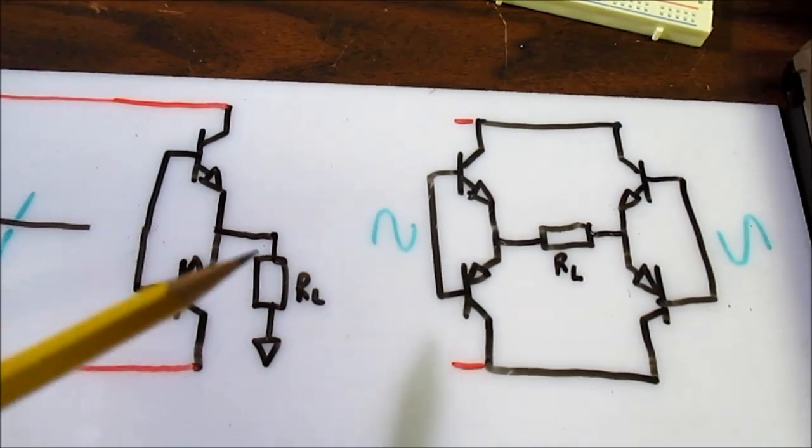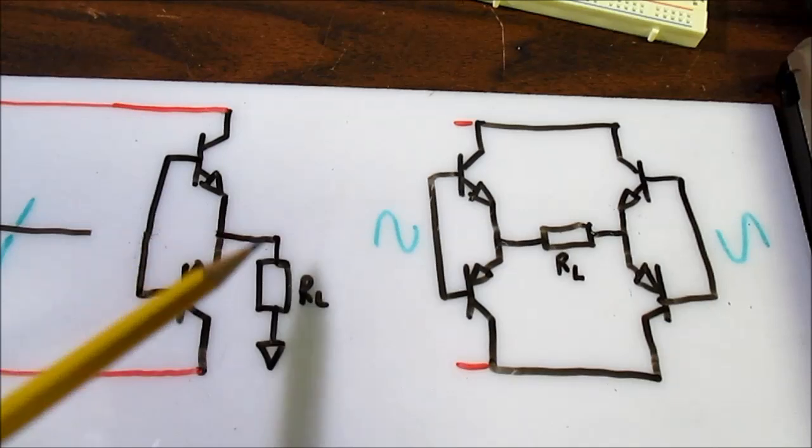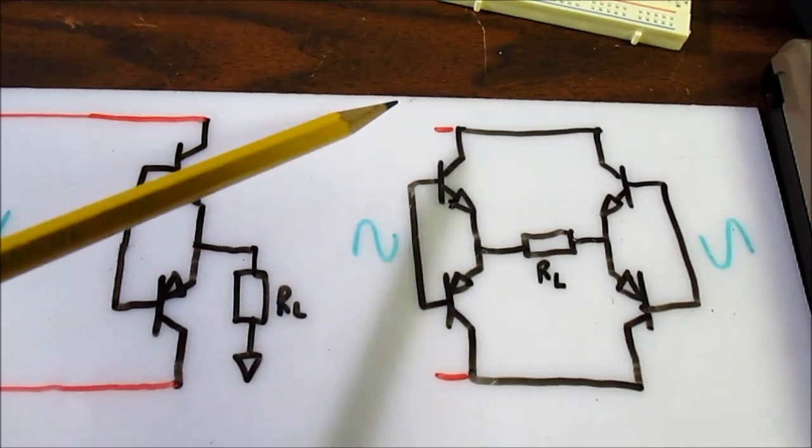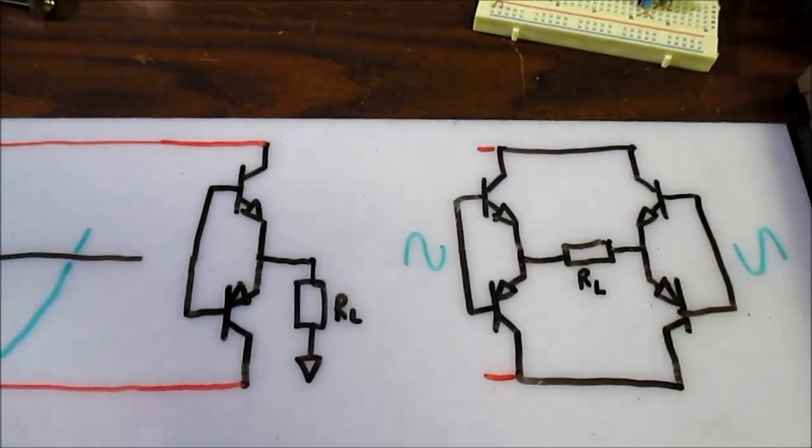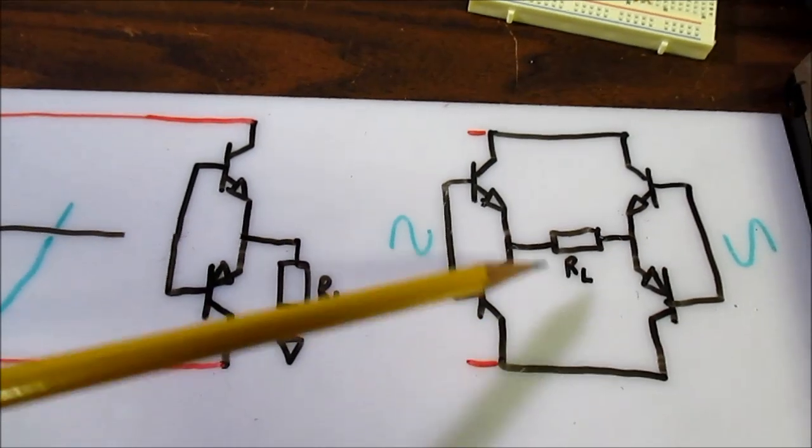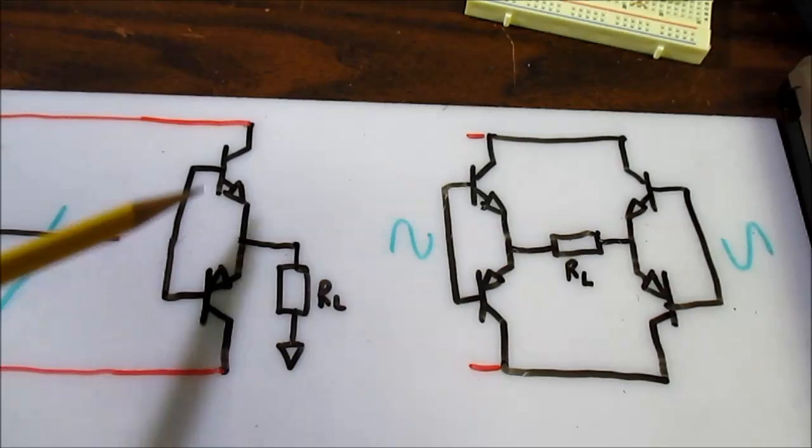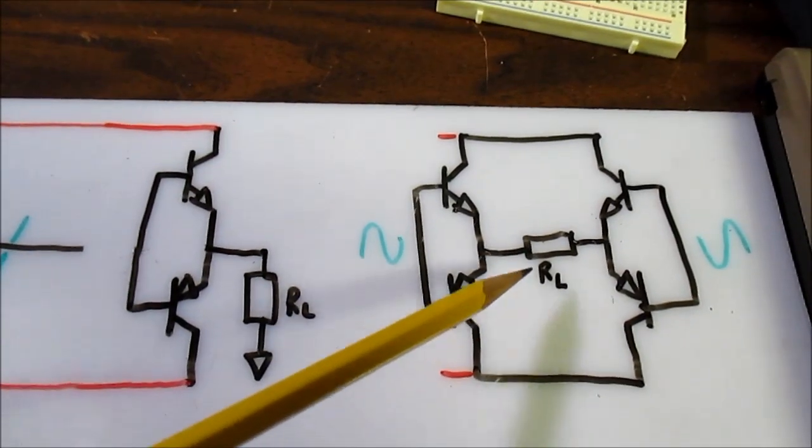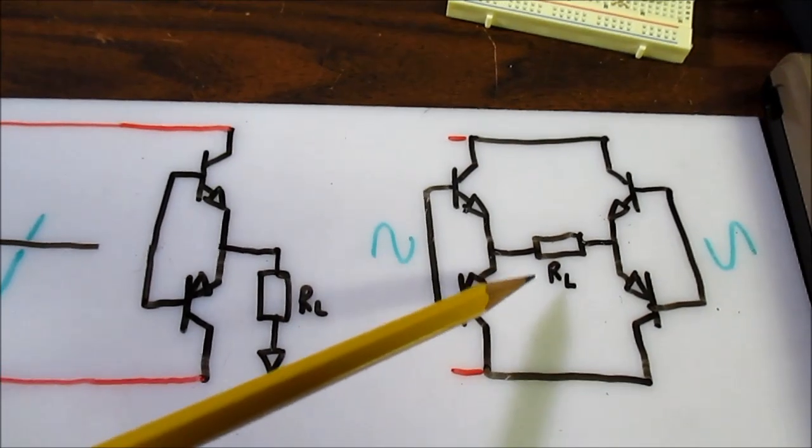But it is going to be significantly more output than you got from the single-ended push-pull stage here, even though you're running the same supply voltage. A couple gotchas, though, is if your chip amp has a 3 amp limit, well, you can't run 4 ohms here. You have to go with 8, or maybe 6 would work.